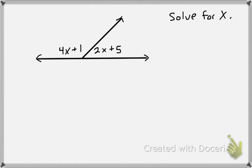Now another type of problem you'll see looks like this. So you have to remember, anytime you see a straight line, it always equals 180 degrees. So when we're going to set up this equation, when we do small part plus small part, it's going to equal 180.